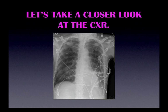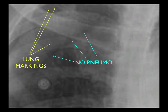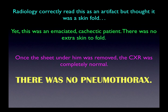Let's go back and look at the original x-ray. There clearly seems to be a line on the right, but with magnification it is not a pneumothorax. Radiology did read the x-ray correctly — unfortunately, about half an hour after the resident read it. Radiology read this as an artifact, a skin fold. However, this was an emaciated, cachectic patient with no extra skin to fold. Once the sheet under him was removed, the chest x-ray was completely normal. There was no pneumothorax, and no chest tube was placed.